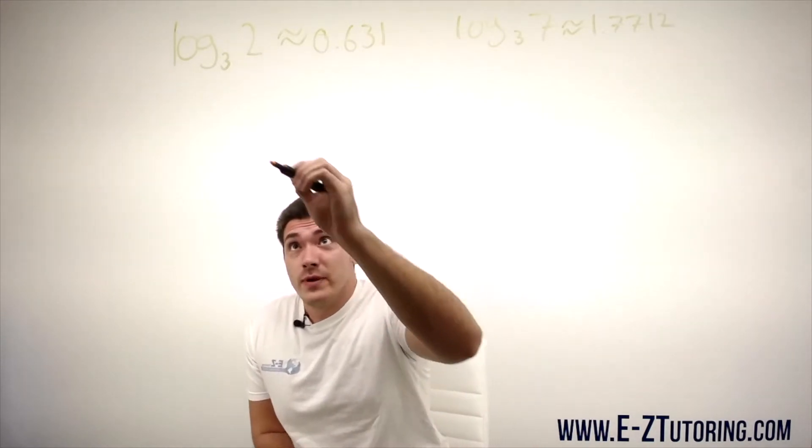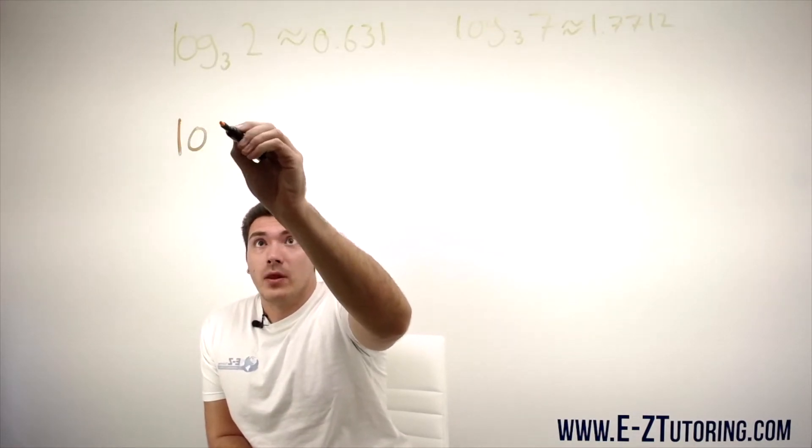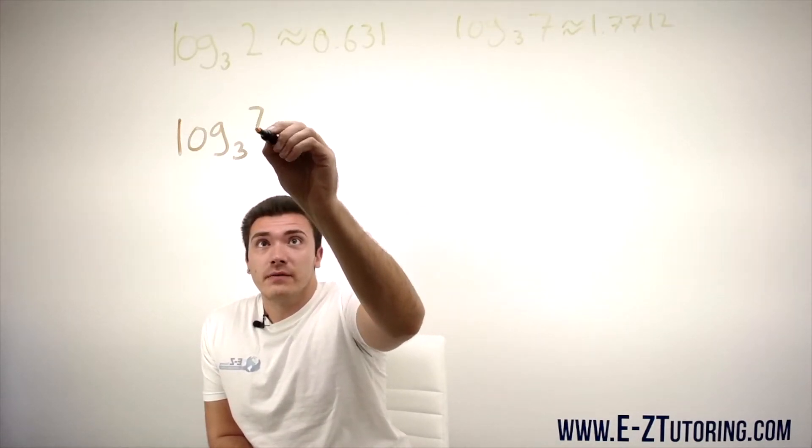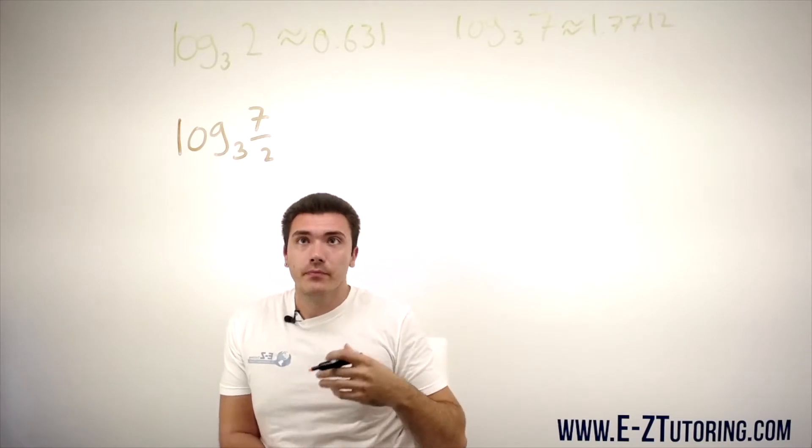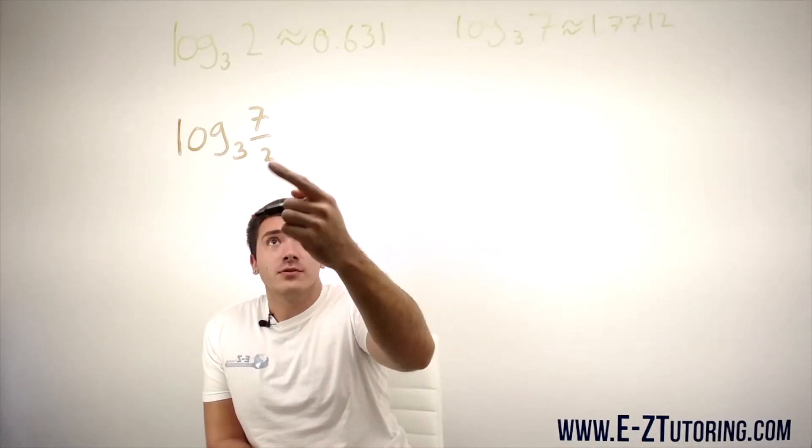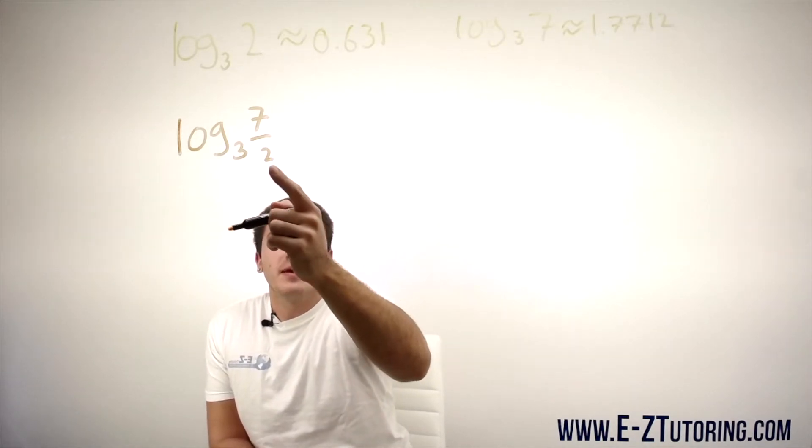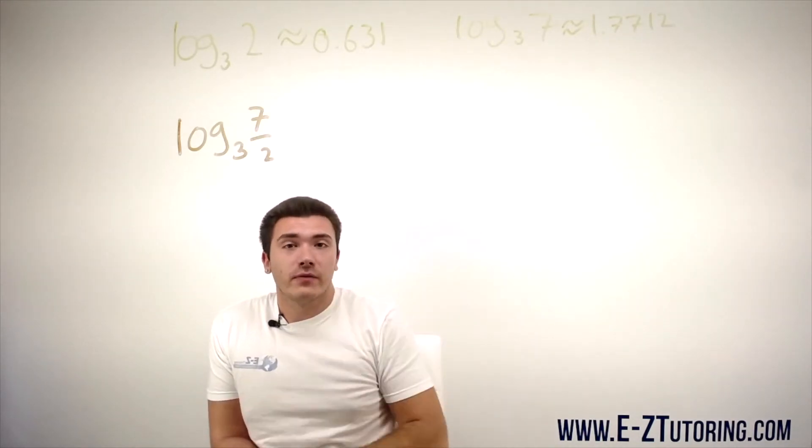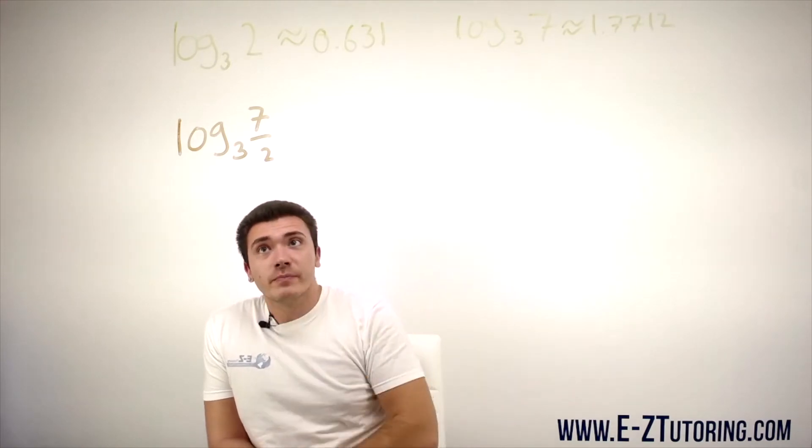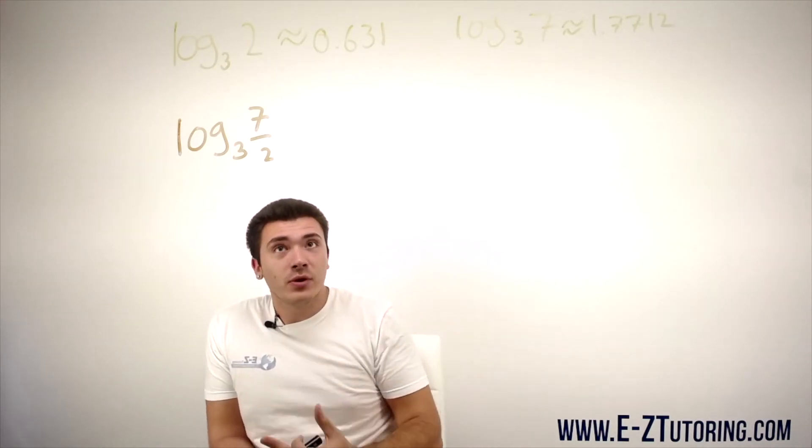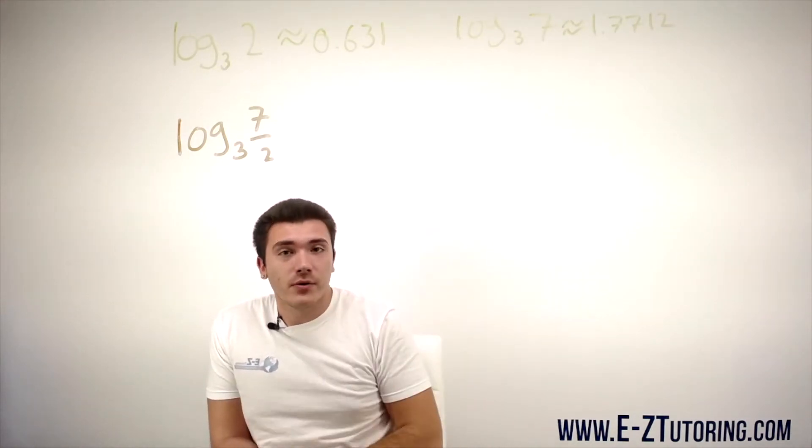So suppose we have log base 3 of 7 over 2. Well, we know what log base 3 of 7 is, it's that over there, and we know what log base 3 of 2 is, it's right over there. So all we have to do is split this logarithm up and rewrite it in terms of these logarithms right here.